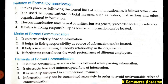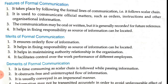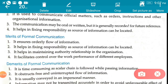Now let us study the features, merits, and demerits of formal communication. Formal communication means whenever transfer of information happens in an organization between two persons with the objectives of the organization, that is formal communication. The first feature is that it takes place by following the formal line of communication — the scalar chain is compulsorily followed. The second feature is it is used to communicate official matters such as orders, instructions, and other organizational information.